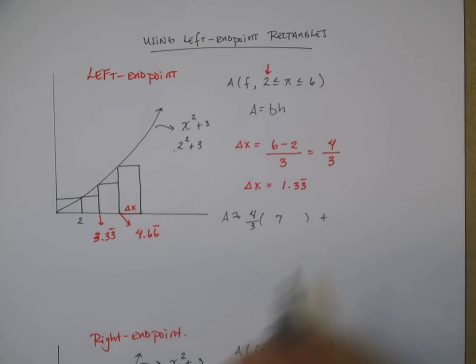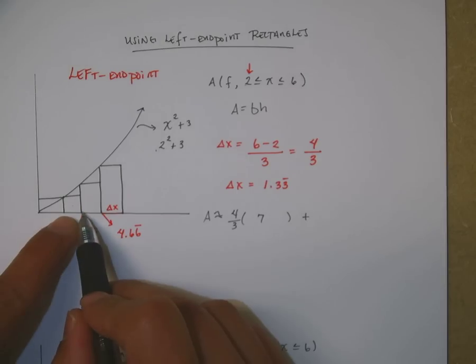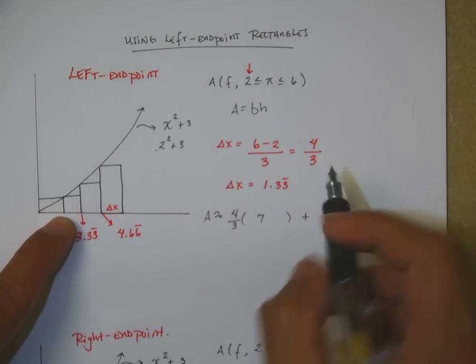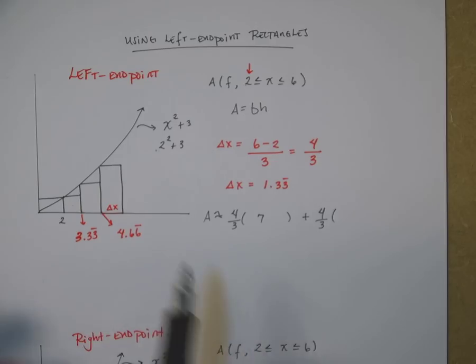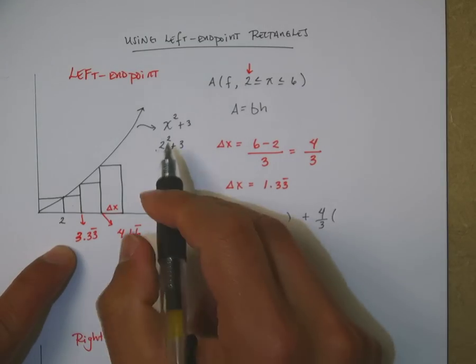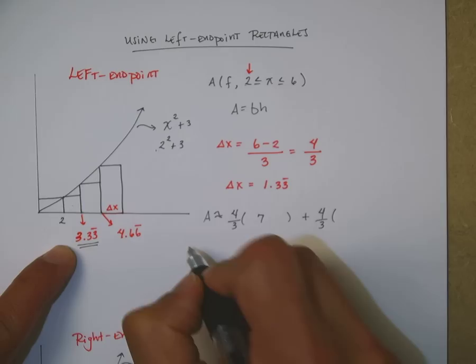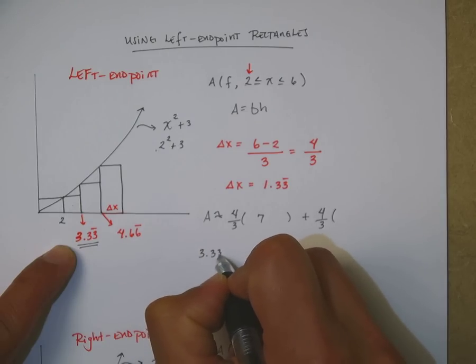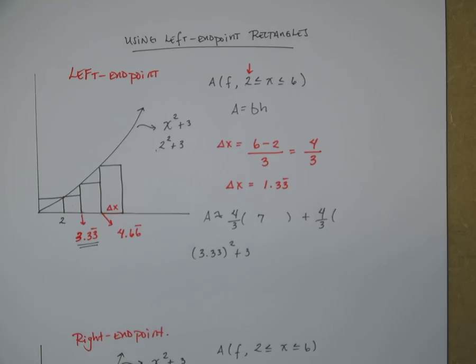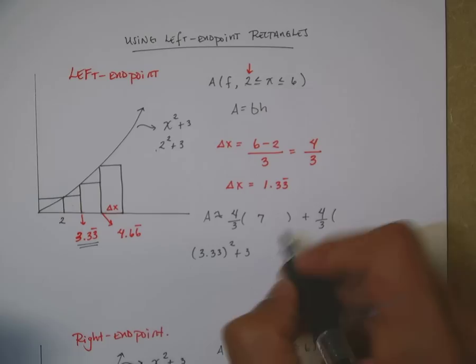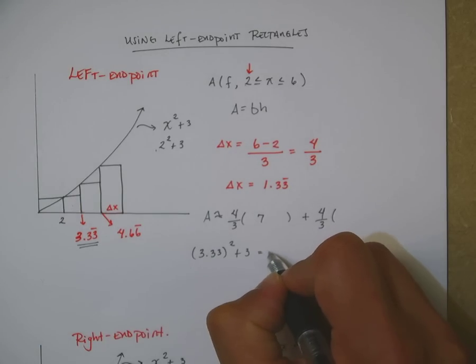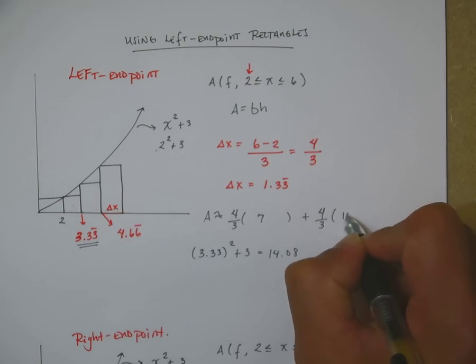And then I go to my next rectangle. This distance here, how wide is it? Same thing, 4 thirds. Now what do I do here? I do the same thing. I plug this 3.33 into here. So let's do 3.33 square that plus 3. If I get my calculator and I do 3.33 squared plus 3, I get 14.08.